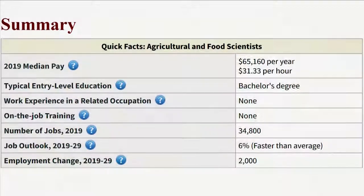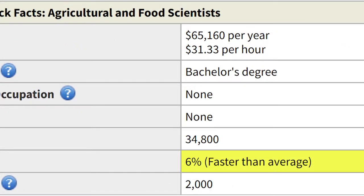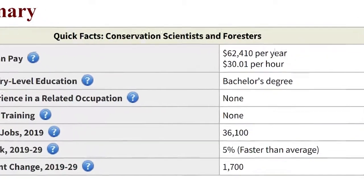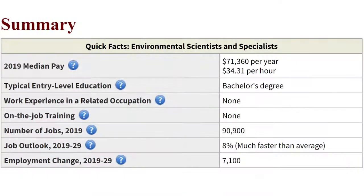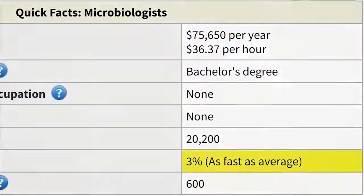Next on the list, we're going to be talking about demand. And this is probably the most important one out of all of them. When it comes to demand, a food scientist is going to be growing around 6% over the next 10 years. For a conservation scientist, it's around 5%. For environmental scientists, it's around 8%, which is much faster than average. And for a microbiologist, it's 3%, which is about average.